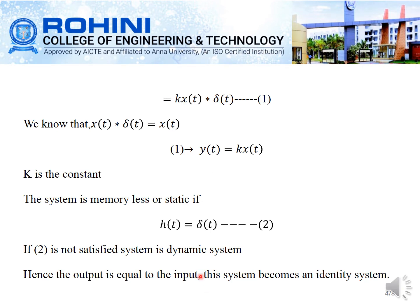We know that x(t) times delta(t) equals x(t). Therefore, this equation can be written as y(t) equal to k times x(t), where k is a constant term.